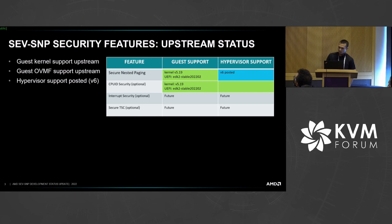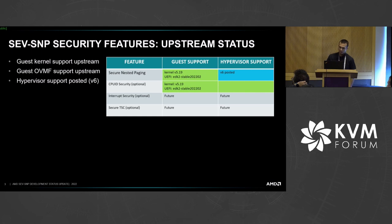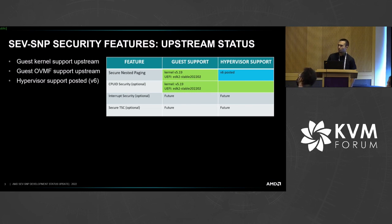Here's a quick overview of where we're at with the overall upstreaming status. One big milestone we recently hit was that guest SNP support for both the main secure nested paging feature and CPUID security are upstream as of kernel 5.19. The SNP security feature doesn't rely on any hypervisor support, so technically that's done as well. The core focus at the moment is on the secure nested paging hypervisor support — the latest patch set was version 6 and we'll be following that up with version 7 fairly soon.